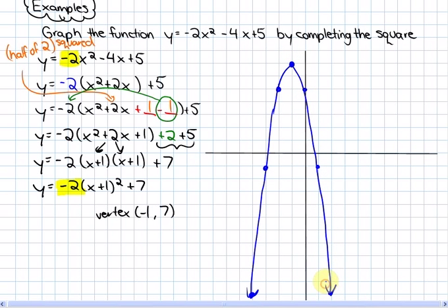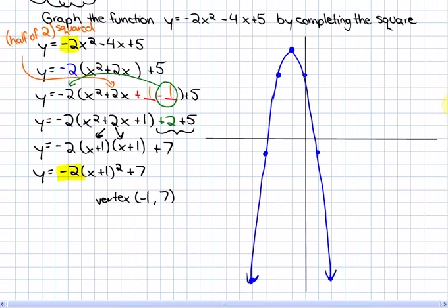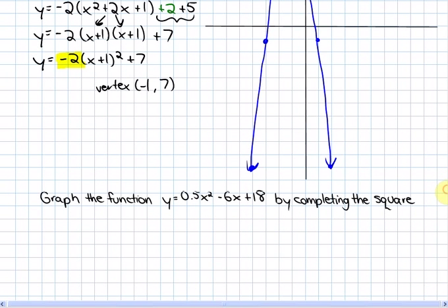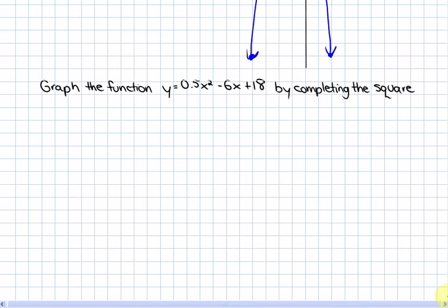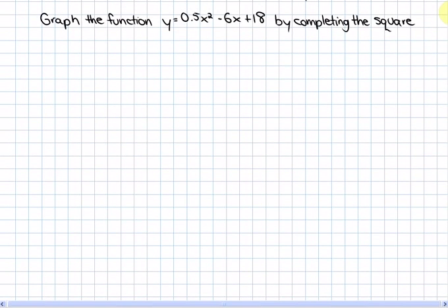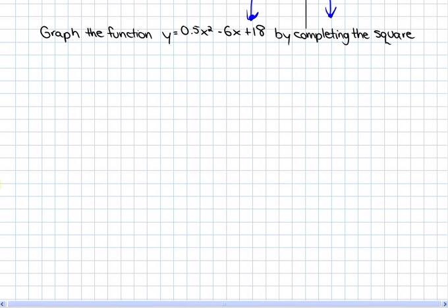We'll do one more with a decimal multiplier, or a decimal a value. So here's the next example. Graph the function y equals 0.5x squared minus 6x plus 18 by completing the square. So the exact same process repeated.